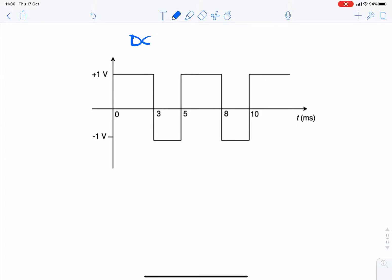So this question was to find the DC term for a periodic signal, x of t, that we're given.